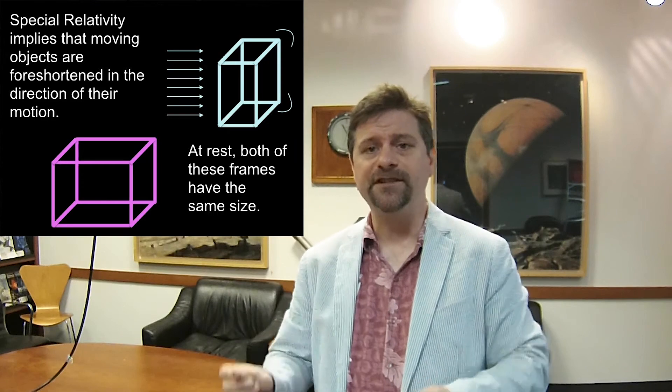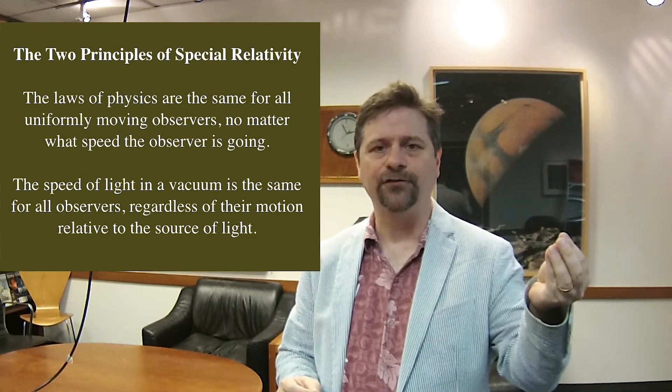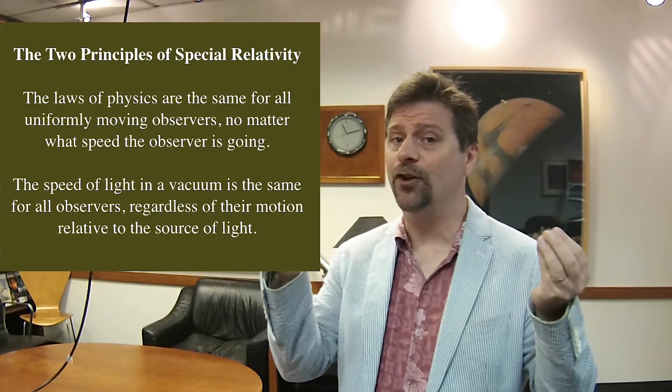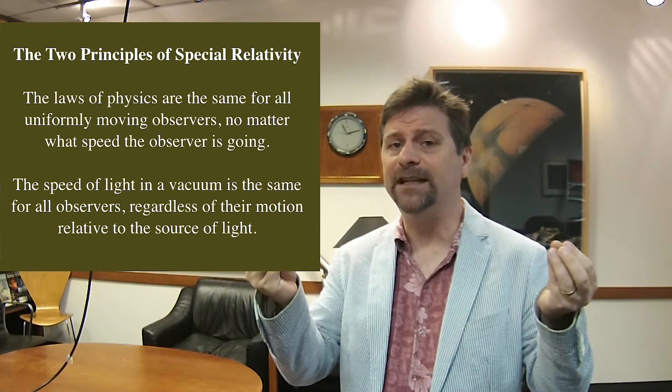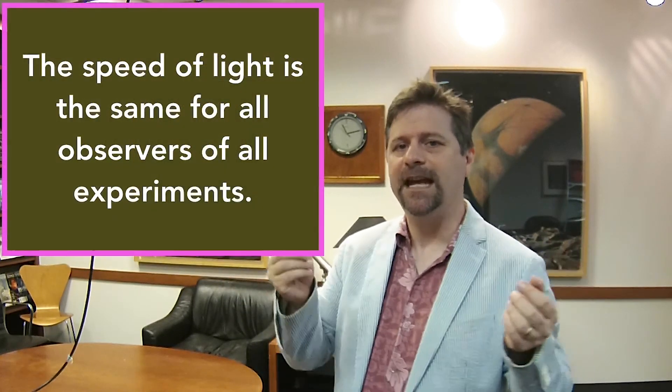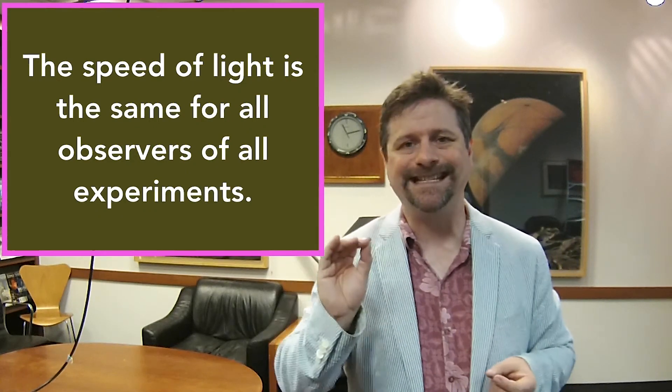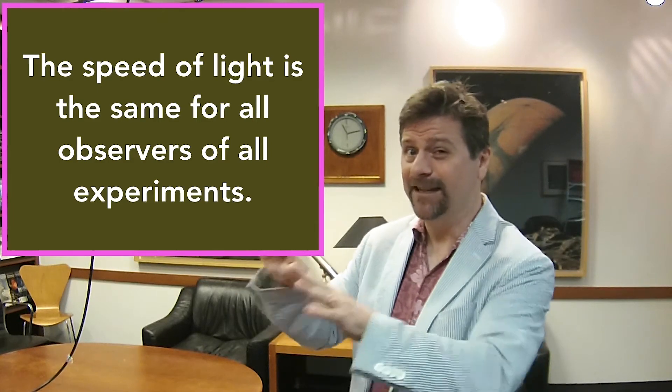So these are crazy things, and this is all as a result of one important element of special relativity. Not only are all inertial reference frames the same, but the speed of light, no matter what, no matter who measures it, no matter how they measure it, is always the same number. That's important. The speed of light measured by everybody, no matter what, is the same, is constant. That's where we're getting this from.